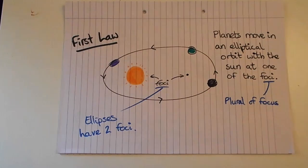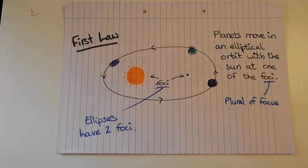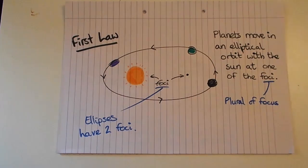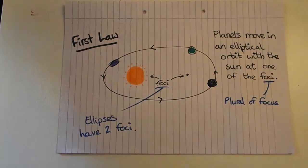The first law is that a planet moves in an elliptical orbit with the Sun at one of the foci. Foci is just the plural of focus. Essentially all orbits are ellipses — even a perfect circle is technically an ellipse. Any orbit that's not a perfect circle is going to have two foci, and Kepler said the Sun is at one of those foci.